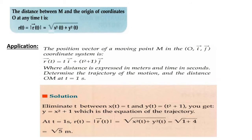Regarding its magnitude, the magnitude of the position vector is calculated by the radical of x squared plus y squared, which is the distance between m and the origin of coordinates at any time t.